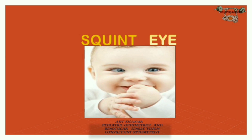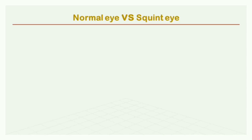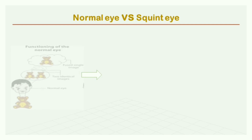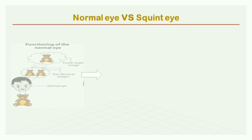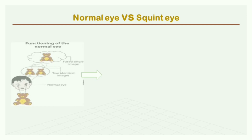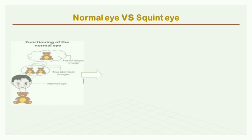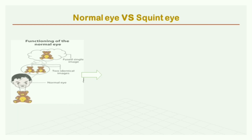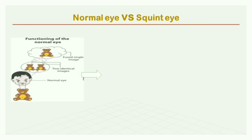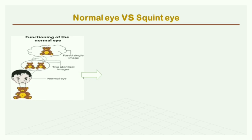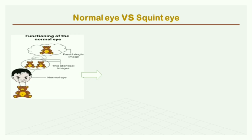Hello friends, I am back with a new topic — the basics of squint. Normal eye versus squint eye: when your eyes are in alignment, you are looking at an object and each eye forms an identical image, but these two images fuse into a single image in the visual cortex of the brain.